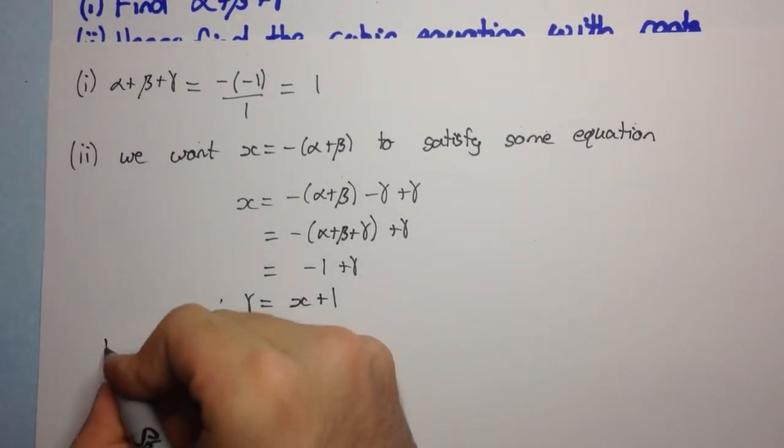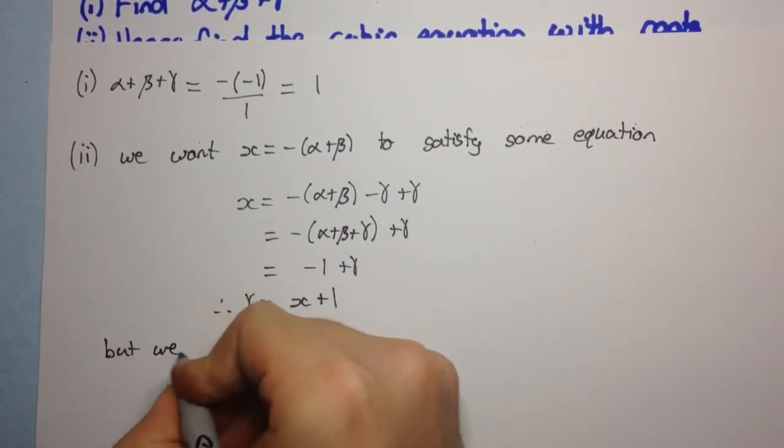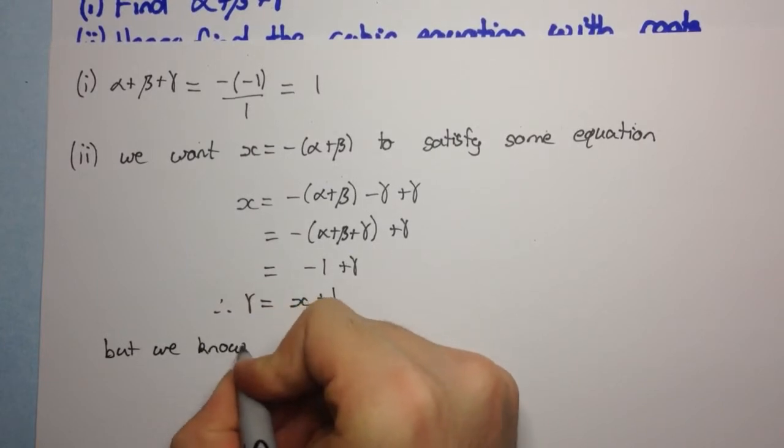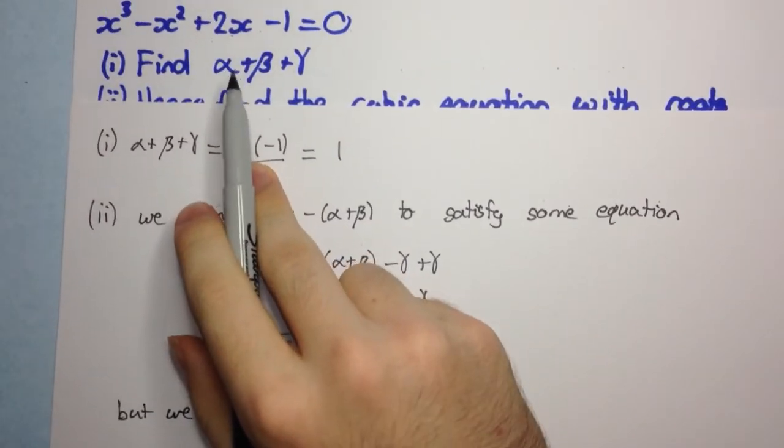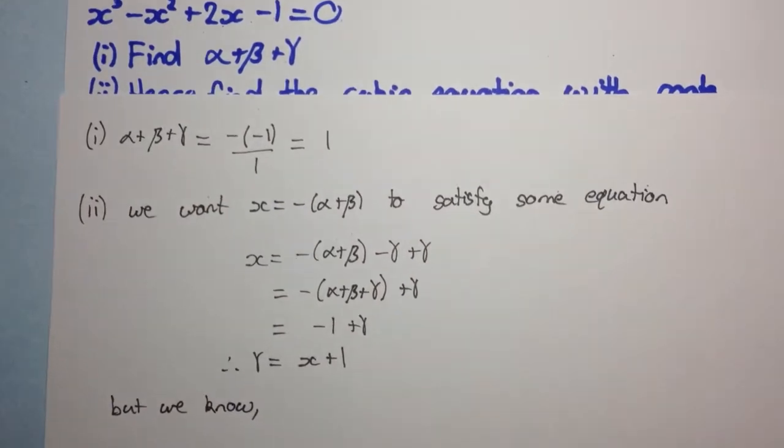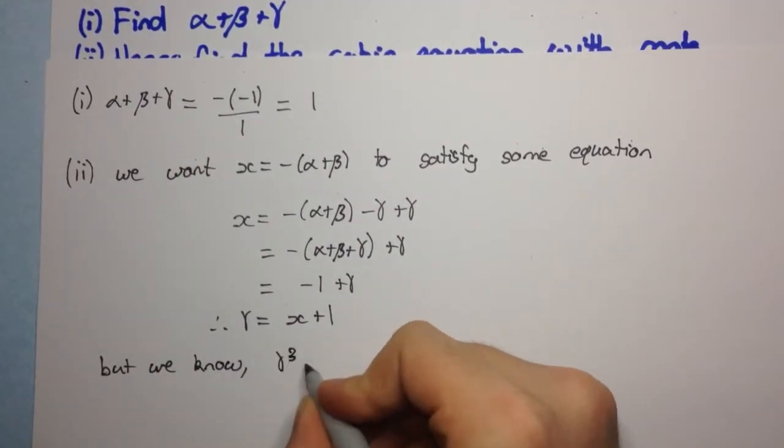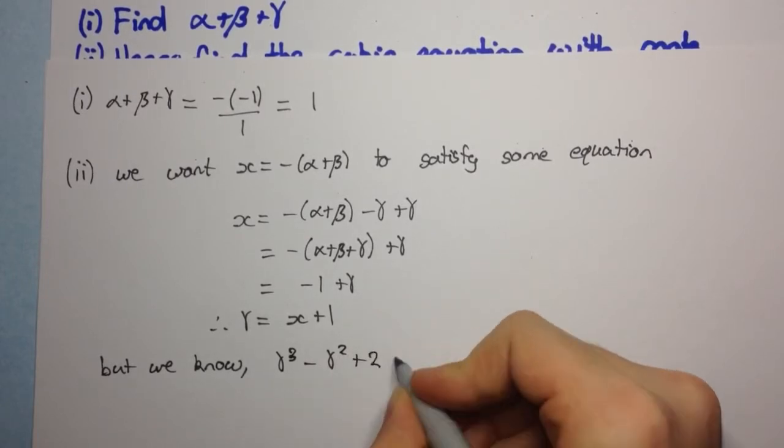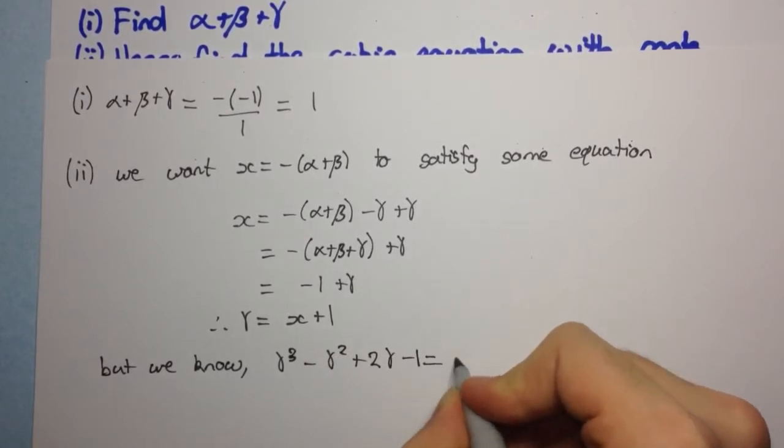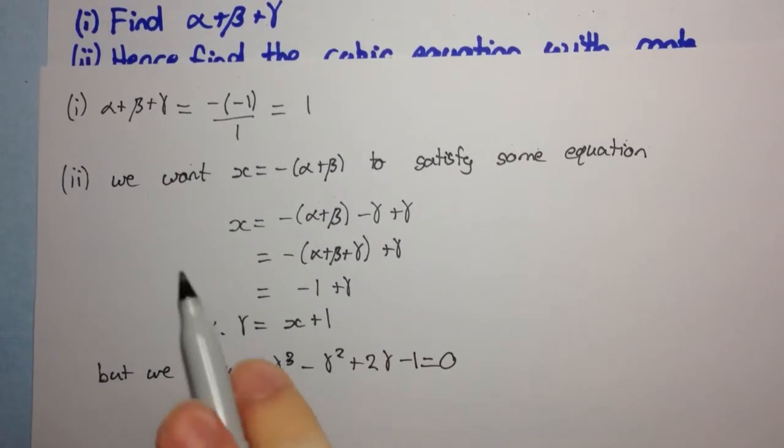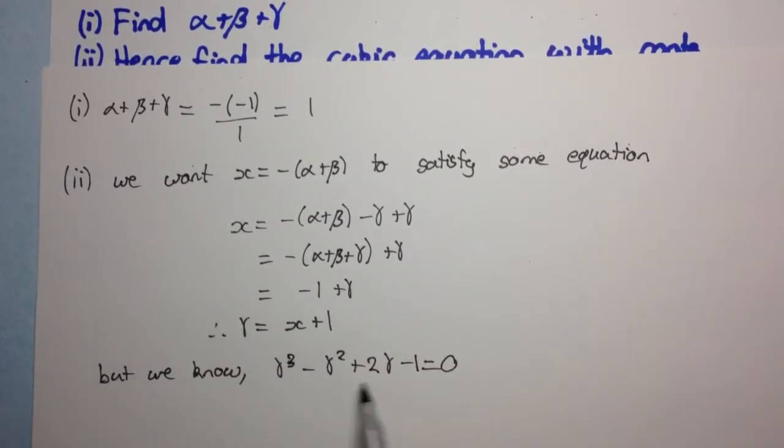Okay, so, but we know that gamma satisfies the equation here, given in the question. So, but we know that gamma cubed minus gamma squared plus 2 gamma minus 1 equals 0. Right, so it satisfies the equation so we can sub it in.